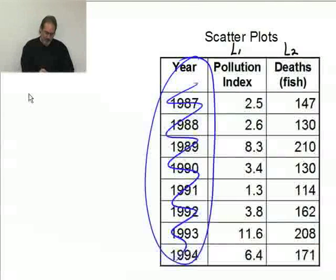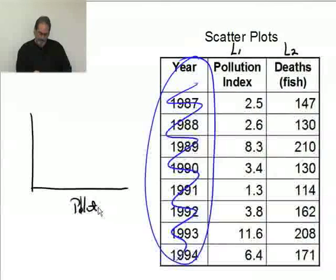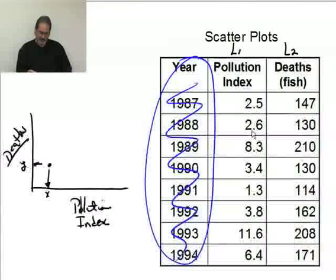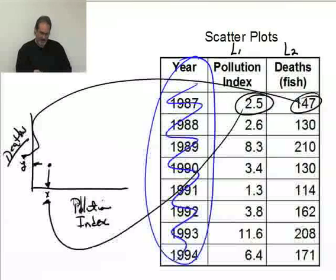The basic idea behind a scatter plot is we have our x and y axes. I'm going to put the pollution index on the x axis and the number of deaths on the y axis. When I have a dot here, it represents a single data point with a specific value on each axis — for example, 2.5 on the pollution index as my x value and 147 as my number of dead fish on the y axis.